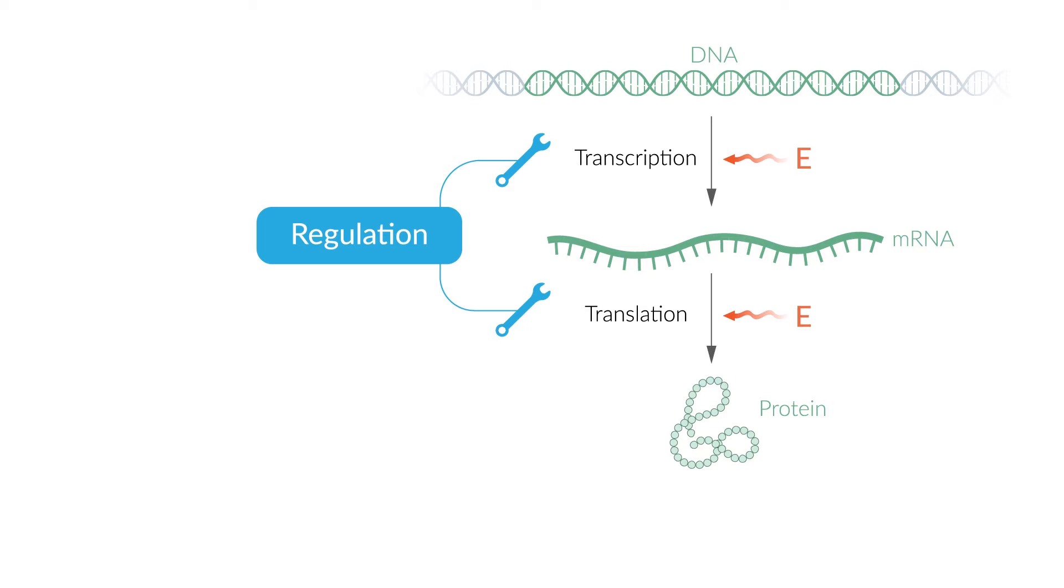Via this regulation, the gene product activity of mainly proteins is also controlled. This enables cells to respond to environmental changes, for example, a change in the nutrient supply.